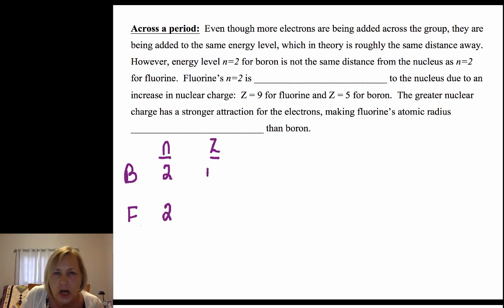The nuclear charge—there are five protons in boron, so its nuclear charge is +5. For fluorine, it's +9. Remember Coulomb's law for potential energy: it's proportional to the charge of the positive, the charge of the negative, over the distance.